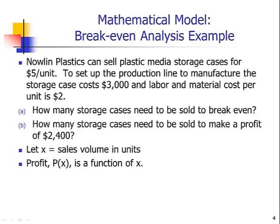I think you've all been exposed to break-even analysis, so we'll start with that. This company, NowLink Plastics, can sell plastic media storage cases — like CD cases, DVD cases — for $5 per unit. To set up the production line it costs $3,000, and the labor and material costs per unit is $2. $3,000 is a fixed cost, meaning it's the cost incurred regardless of how many units are produced, and $2 is the unit variable cost attached to each unit sold or produced. And we have the $5 per unit selling price.